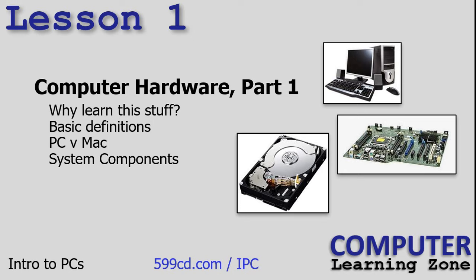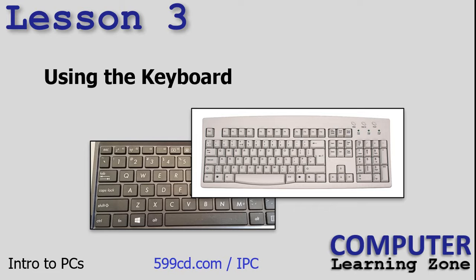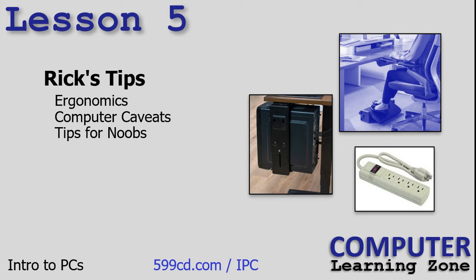In Lesson 2, we are continuing to learn about computer hardware — we're going to talk about data storage, peripherals, and power protection. In Lesson 3, we're going to talk about using the keyboard. We'll learn about what all the different keys on the keyboard are, those little lights, and we'll learn how to use most of them. In Lesson 4, we're going to talk about using the mouse. Lesson 5 is something I call Rick's Tips — we're going to talk about ergonomics, computer caveats, things you've got to watch out for, and tips for noobs. New computer users are called noobs — it's a term of endearment, we don't mean any insult by it.